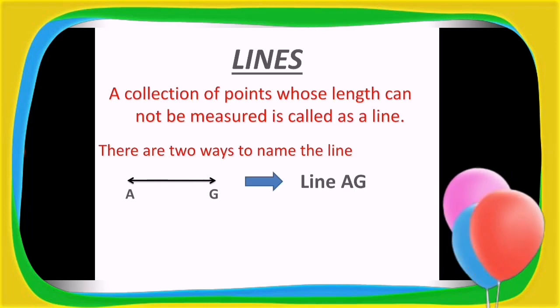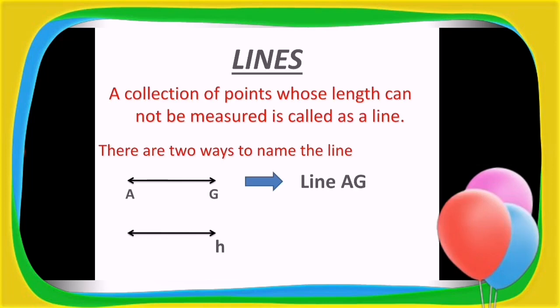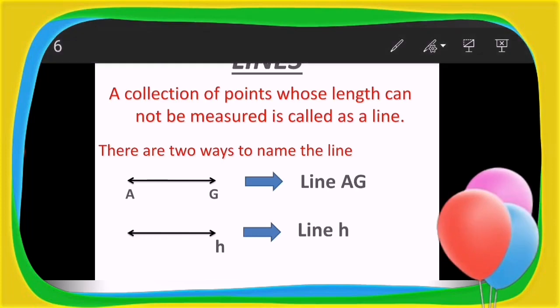And while writing it, how will you name it? Line AG. Similarly, the second way of writing the name of the line is by writing a small letter at one of the arrowheads, and how to name it? Line H. So I hope you have understood. We have to write capital letters near the arrowheads and those capital letters only will make the name of the line.